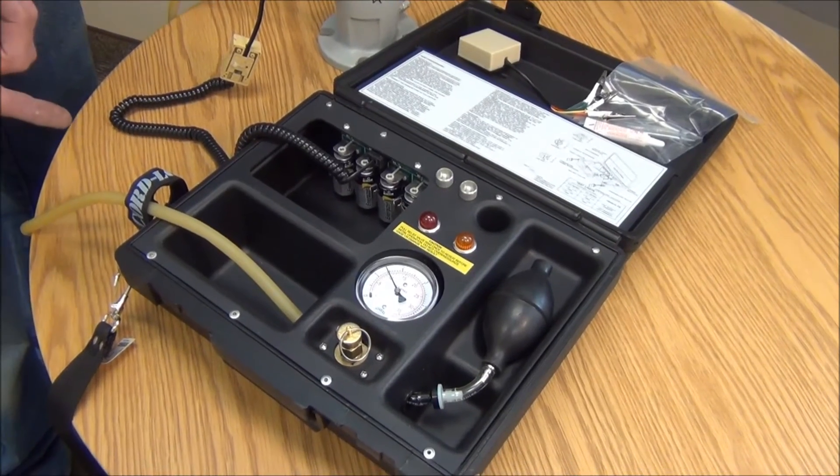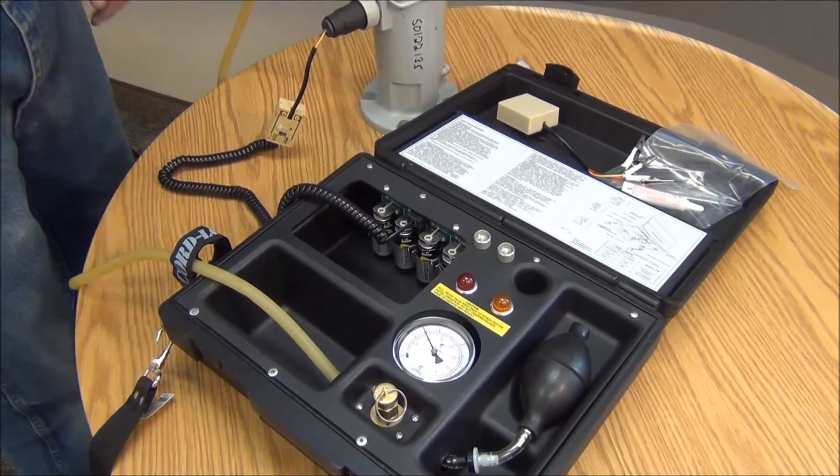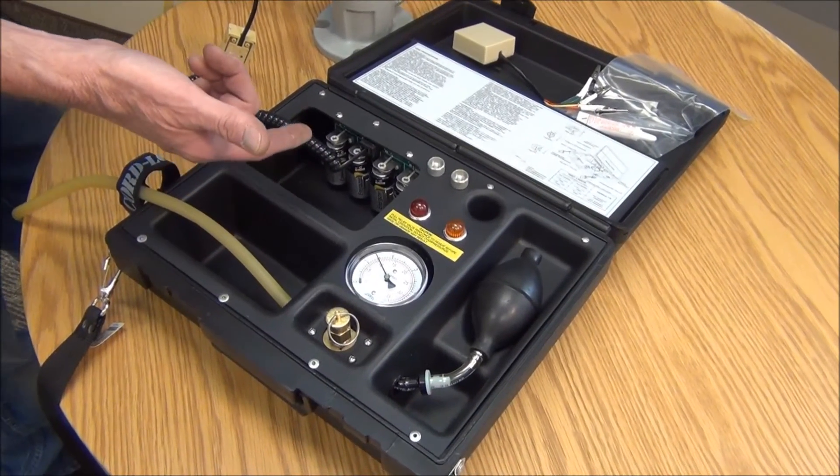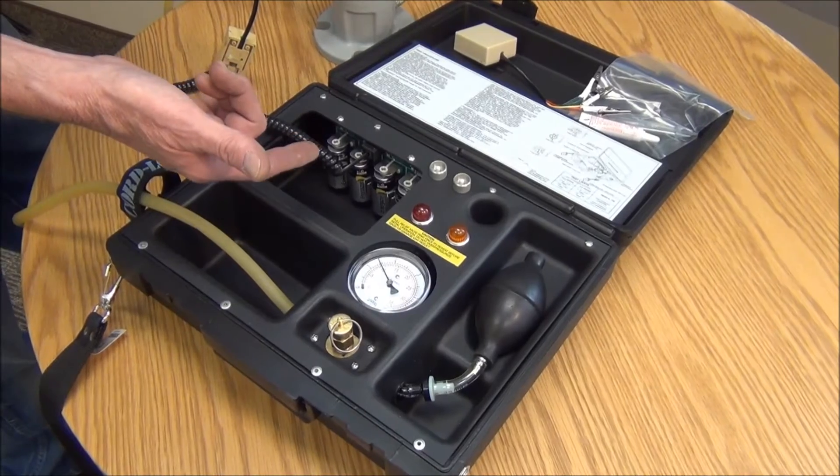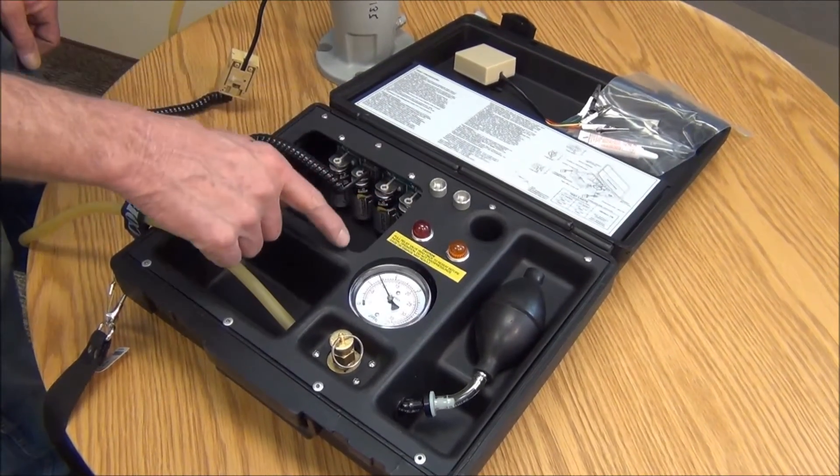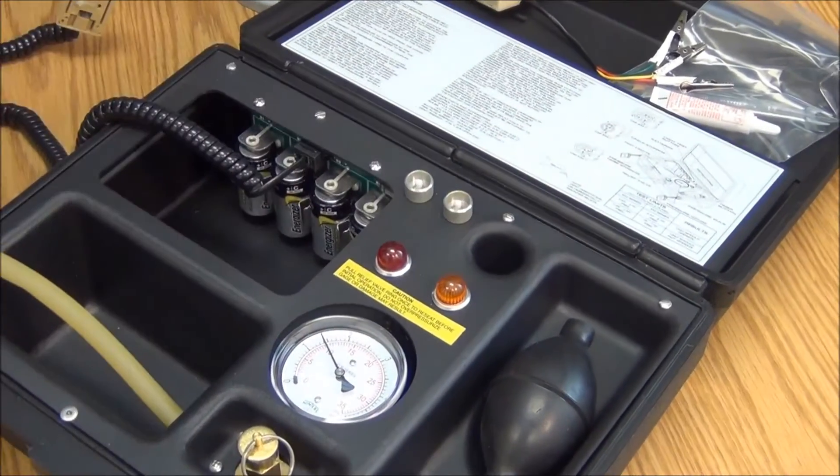This test kit also has a power down timer. In the course of your testing, if all of a sudden you don't have any lights, there's about a five to seven minute timer where it powers down from the batteries to the circuit board. In that case, you'd have to repress this button to power it back up.